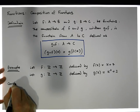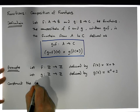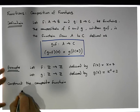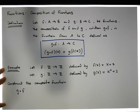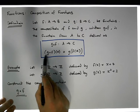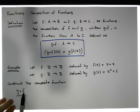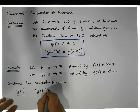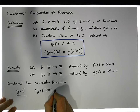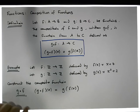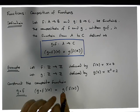We'd like to construct the composite function G after F. When we compose two functions together we get another function, so G after F applied to inputs X is by definition equal to G of F of X.